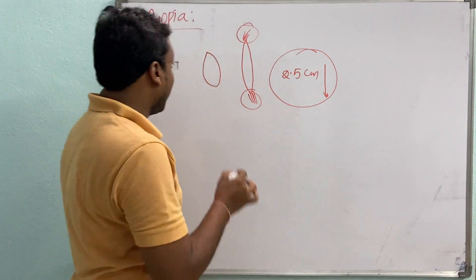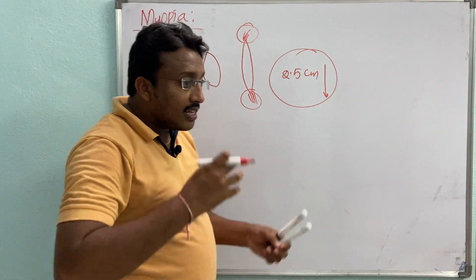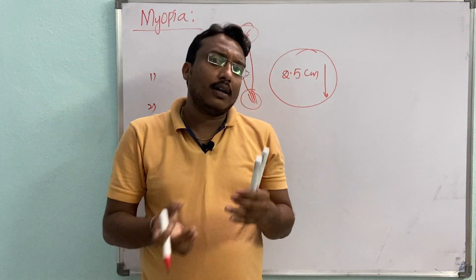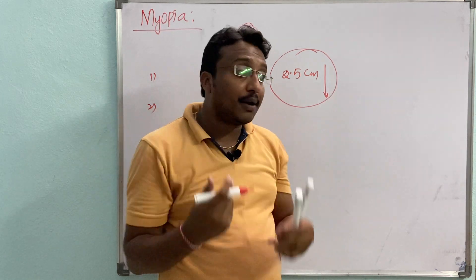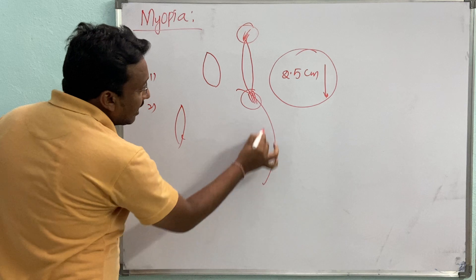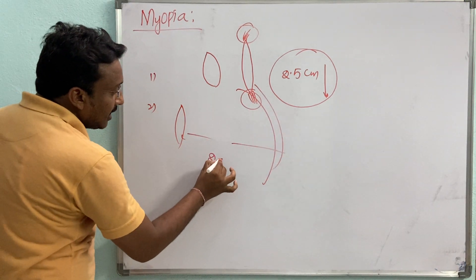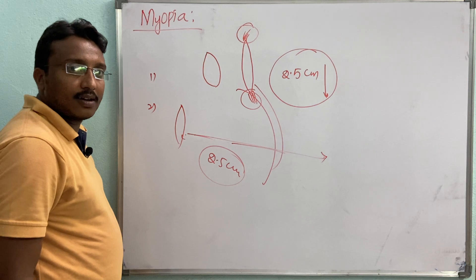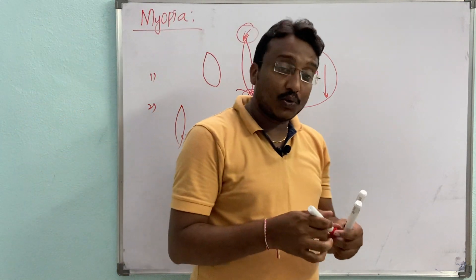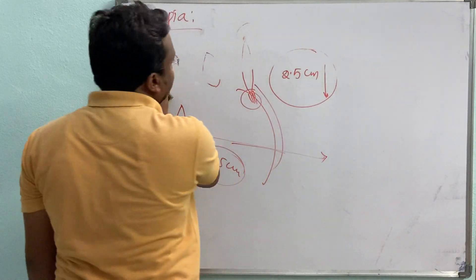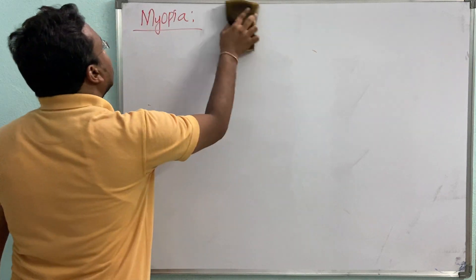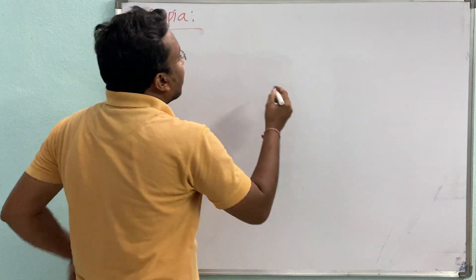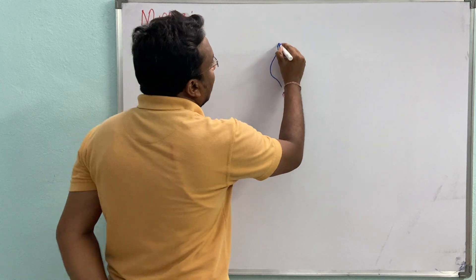A second reason for myopia is that the size of the eyeball may increase. If the size of the eyeball increases, the distance between the eye lens and the retina also increases — which is normally 2.5 centimeters. These are the two main reasons for myopia: either the ciliary muscle loses its flexibility, or the size of the eyeball increases.